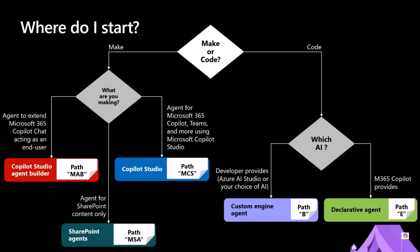On the other side, if you want to be a coder, it really depends on how you want to implement your extension for Copilot. If you want to rely on the native model provided by Microsoft 365 Copilot, you will go for the extend path and create a declarative agent. If you want to use your own model, you will go for the custom engine agent, path B.